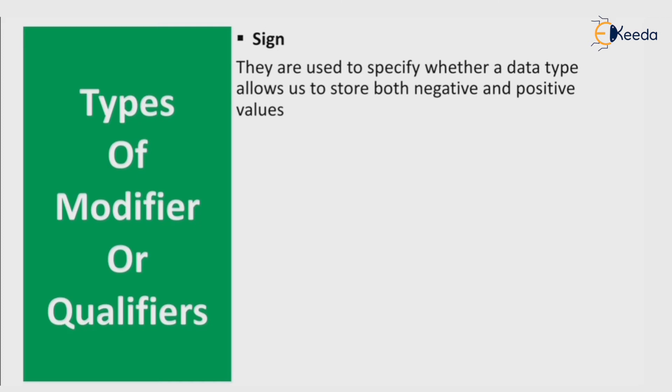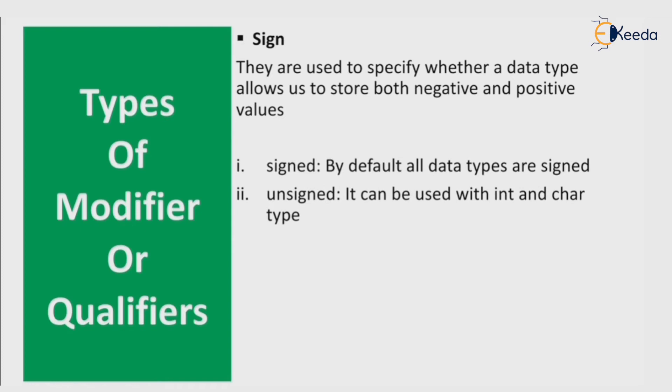Sign modifiers are used to specify whether a data type allows us to store both negative and positive values. Signed: by default all data types are signed. Unsigned can be used with int and character type. If n is the number of bits, the range of unsigned modifier is from 0 to 2 raise to n minus 1. The range for signed is negative 2 raise to n minus 1 to positive 2 raise to n minus 1 minus 1.